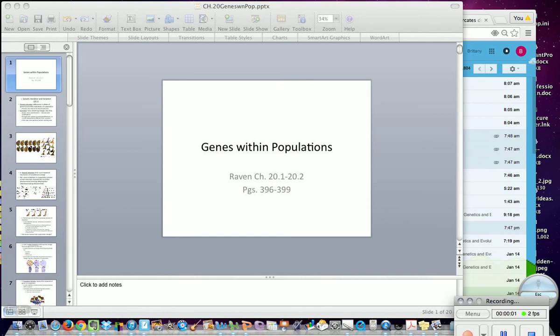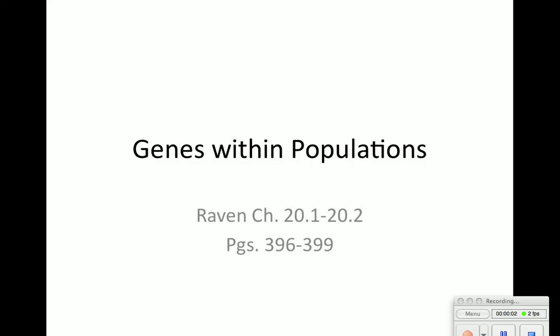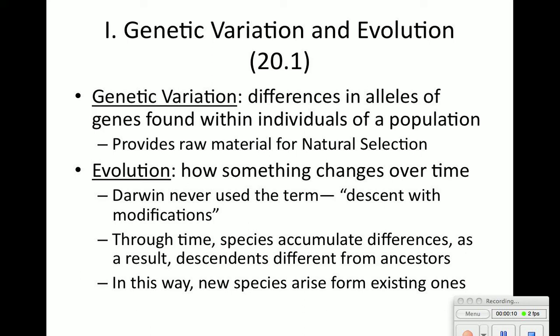Chapter 20 is genes within populations. Today's objectives: we are going to look at the Hardy-Weinberg principle and how alleles change within populations. Genetic variation is differences in alleles in populations — there's lots of genetic variation between us, like hair color and eye color. Genetic variation is the raw material that natural selection works on.